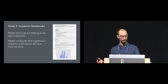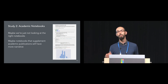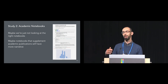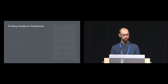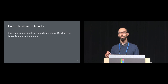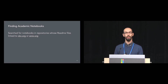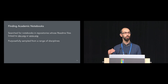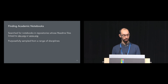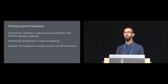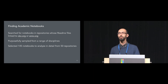What if instead we looked at academic notebooks — ones published online as a supplement to some academic publication? Maybe these will have more narrative, as academics want others to cite, understand, or build on their work. We looked for notebooks in repositories whose README files linked to a DOI or arXiv preprint. We purposely sampled notebooks documenting original research from a range of disciplines — biology, machine learning, astronomy — and selected 145 notebooks documenting analyses for essentially 50 different academic publications.